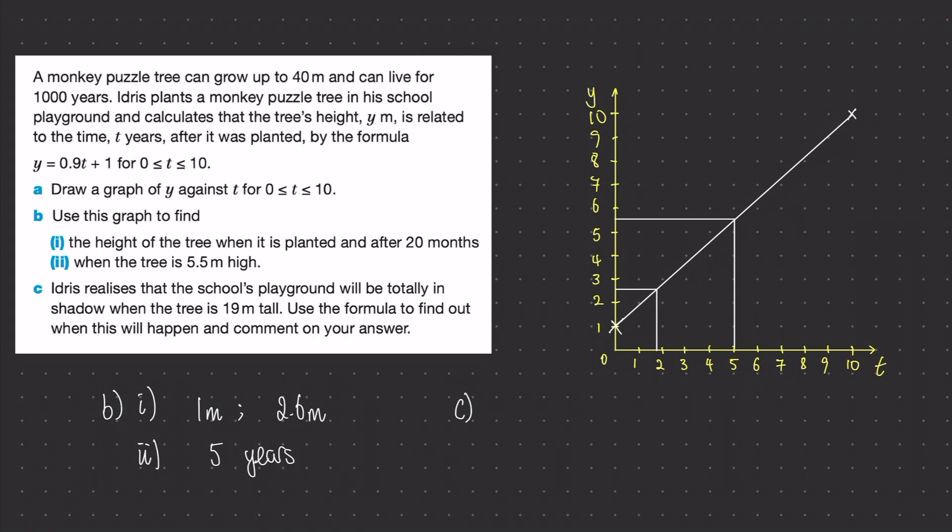So let's move on to part c now. Using the graph we would not be able to work out when the tree is 19 meters tall because we've not plotted our y-axis up to 19 meters. We're going to have to use the formula given to us instead, so that is y = 0.9t + 1. What we're going to do then is replace one of these variables with the one that we've been given. So the height is 19 meters tall, let's replace y with that. And what we're going to do now is simply work out this equation. Minus 1 from both sides and then dividing both sides by 0.9 gives us t = 20 years.